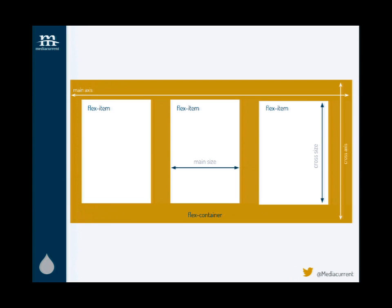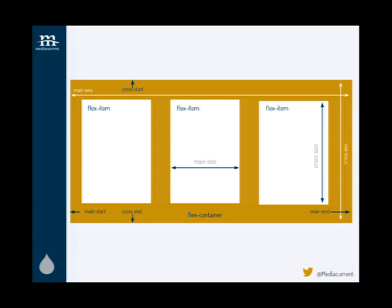We have cross start and cross end, main start and main end. So instead of saying left, top, right, bottom, we have to learn this new way of laying out things within our containers. That's the part that takes a little bit of getting used to, because we're not used to saying place this at the start or at the end. But once you start looking into it and playing with it, you'll get the hang of it.